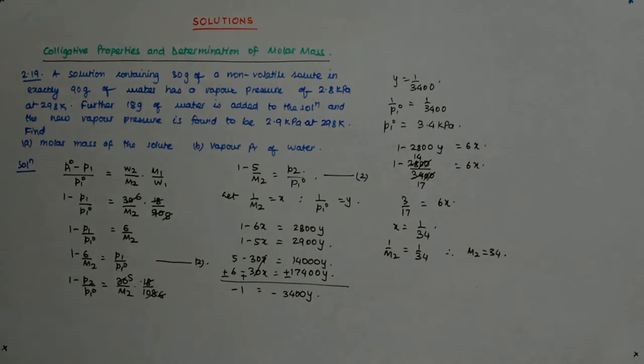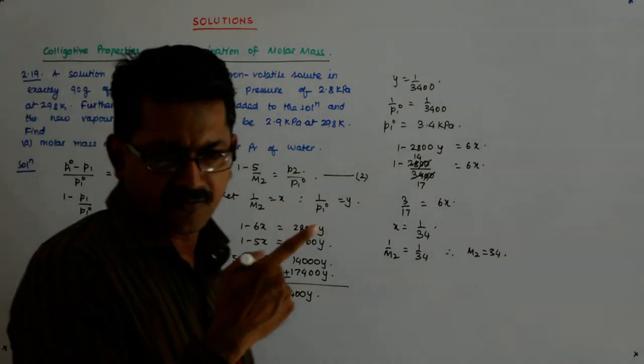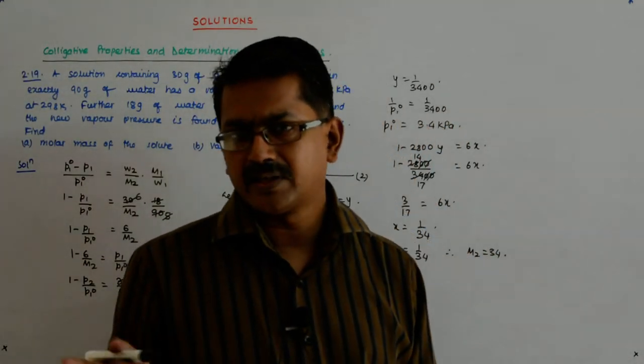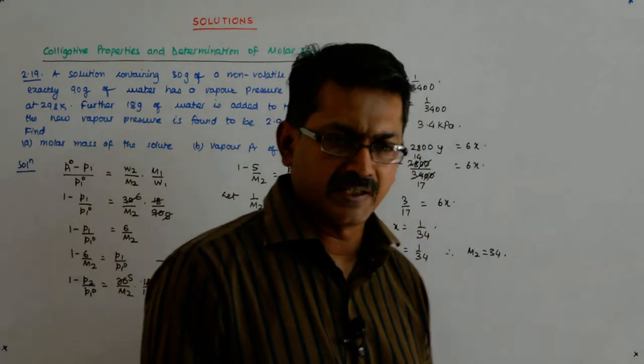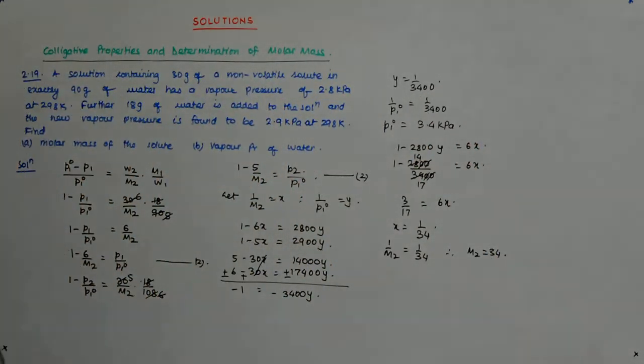Now this discrepancy has arisen due to what? Due to an approximation that we took. It is not so dilute that you will be able to cut off that, you remember, there was N1 plus N2 in the denominator. So, had you not taken that, then it would have been okay.